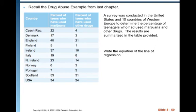Okay, recall the drug abuse example from last chapter. Hopefully you saved your document and you still have it. A survey was conducted in the United States and 10 countries of Western Europe to determine the percentage of teenagers who had used marijuana and other drugs. The results are summarized in the table provided. And we're going to write the equation of the line of regression. Or you could write the least squares regression line, the linear model, the regression model, the LSRL. All of those mean the same thing.